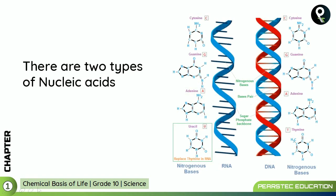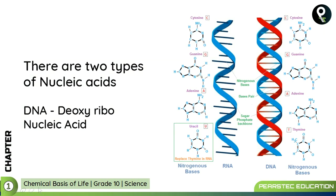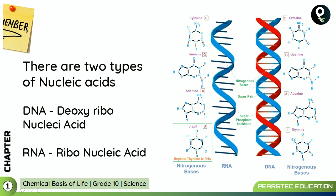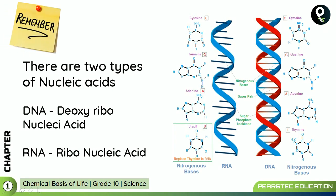There are two types of nucleic acids. The first one is DNA — deoxyribonucleic acid. And the second one is RNA — ribonucleic acid. You should remember what DNA and RNA stand for.